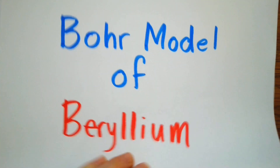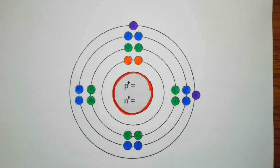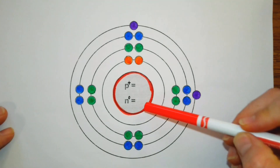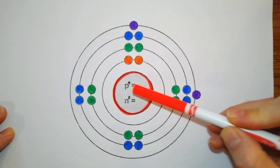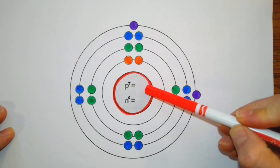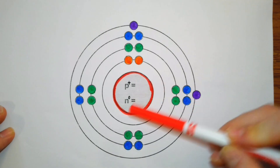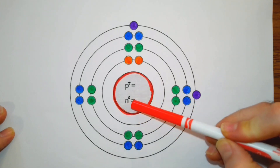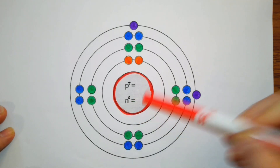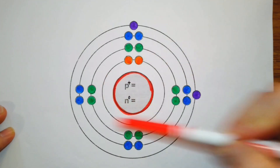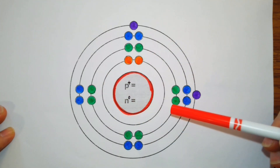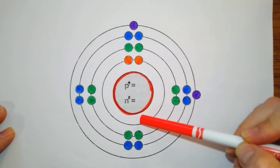Let's do a quick review. When we do Bohr models we are going to have a circle and that's going to represent the nucleus, all the way in the center. Then we're going to have p equals a number, representing the number of protons, and n equals a number, representing the number of neutrons. The electrons are going to orbit the nucleus in orbits or shells.